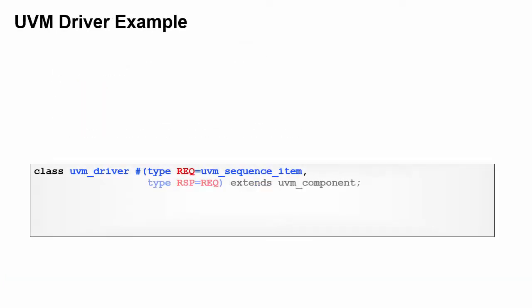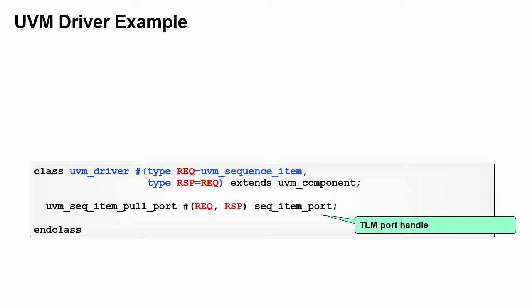Where does the driver come from? The base class is UVM driver, which is parameterized. The first type is REQ for the request type, and the second is RSP for the response type, with the default of the request type. Here's the declaration for the special TLM connection seq_item_port, which is bidirectional. It's constructed in the base class, so you don't have to.